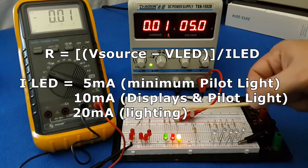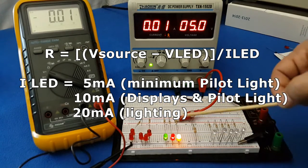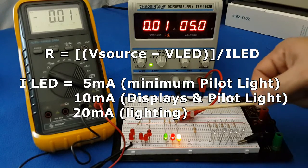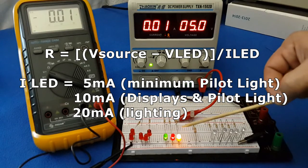What current to use? Five milliampere minimum, 15 to 20, 10 milliampere is enough to light a LED.